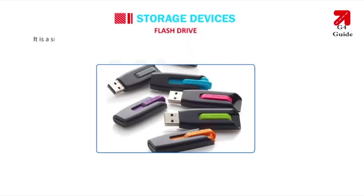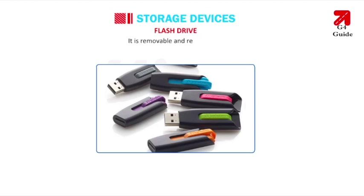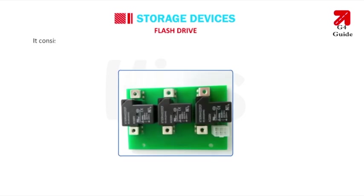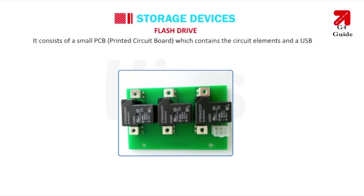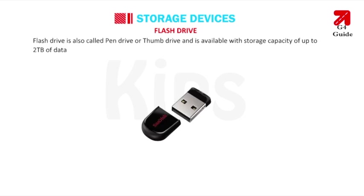A flash drive is a small, portable flash memory data storage device mainly used to transfer audio, video, and data files from the hard drive of one computer to another. It is removable and rewritable, and is plugged into the computer's USB port. It consists of a small PCB — Printed Circuit Board — with circuit elements and a USB connector, electrically insulated and protected inside a plastic, metal, or rubberized case.